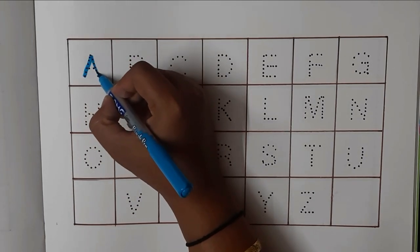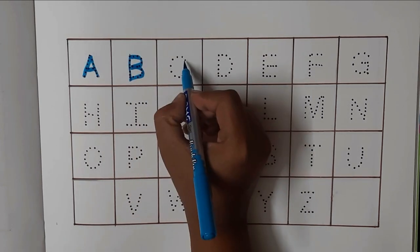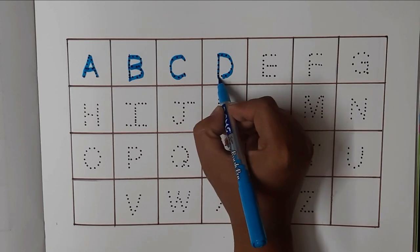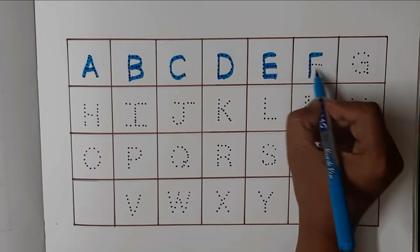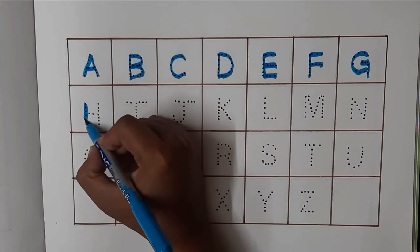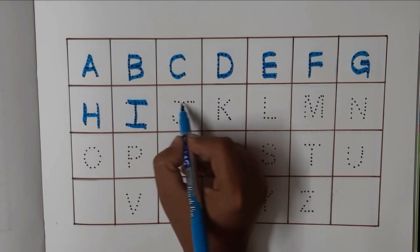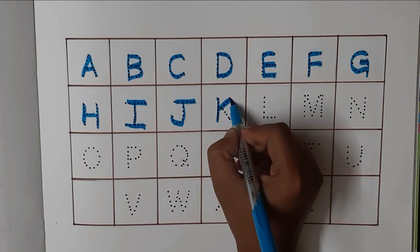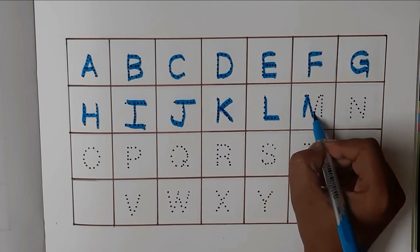A for apple, B for ball, C for cat, D for dog, E for elephant, F for fish, G for grabs, H for horse, I for ice cream, J for joker, K for kite, L for lion, M for monkey.